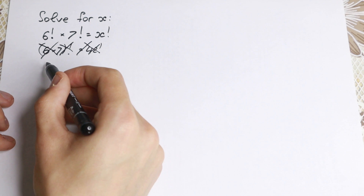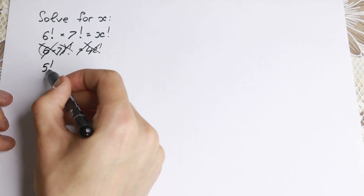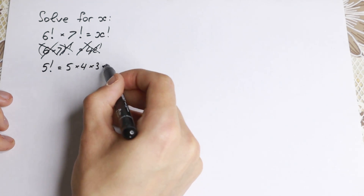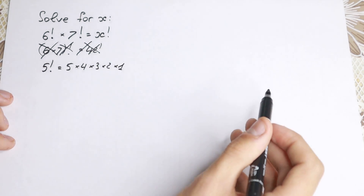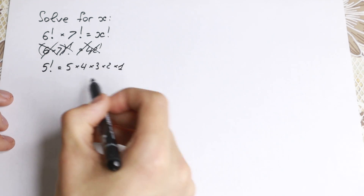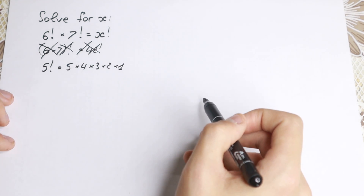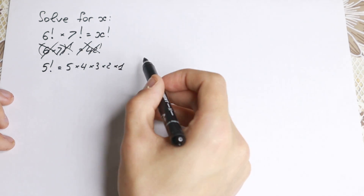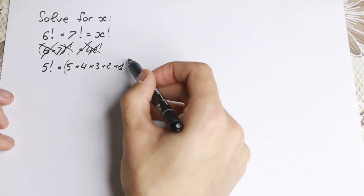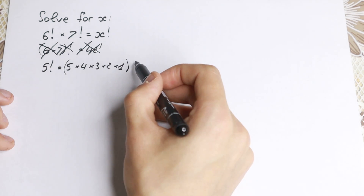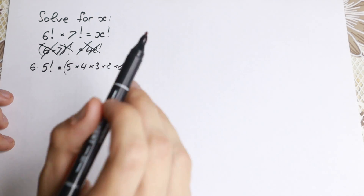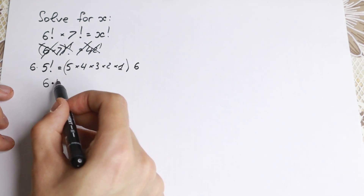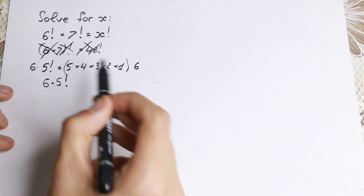Let's look closely at an example. We know that 5 factorial equals 5 times 4 times 3 times 2 times 1 — this is the classic definition from school. Now, here's an interesting moment: if we multiply both sides by 6, on the left we get 6 times 5 factorial.